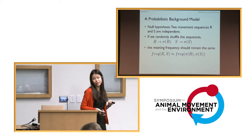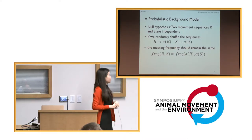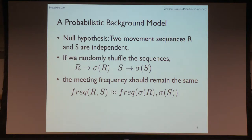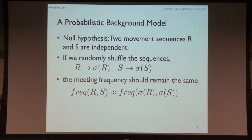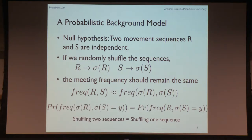So how do we get the expected value? The null hypothesis is: if two movement sequences R and S are independent, then randomly shuffling one sequence should leave the meeting frequency the same. If the original frequency equals the shuffled frequency, they're considered independent — meaning I'm not really affected by you. If I randomly move, we'd have a similar meeting frequency. Shuffling just one sequence is equivalent to shuffling both, since we only care about relative meeting events.